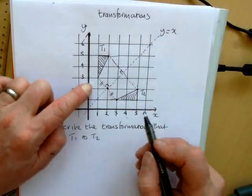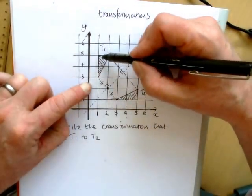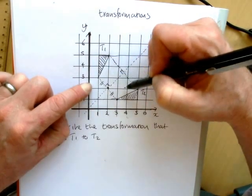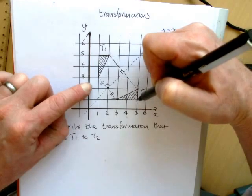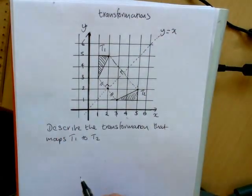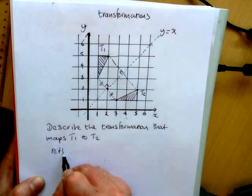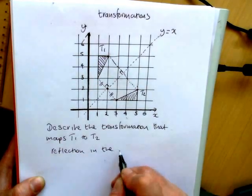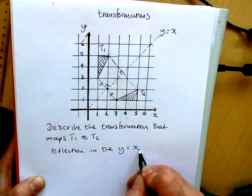So this is most certainly going to be a reflection in the y equals x. We'll just check here, one diagonal, two diagonals, one diagonal, two diagonals. So the correct answer is a reflection in the y equals x line.